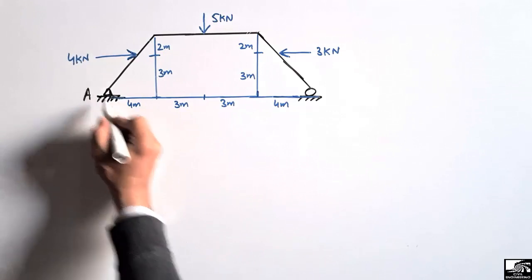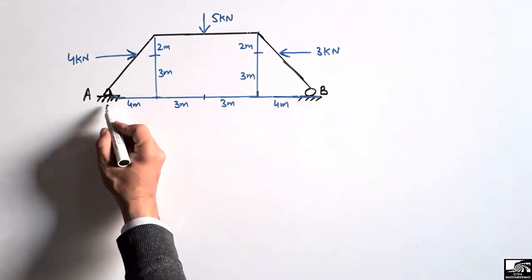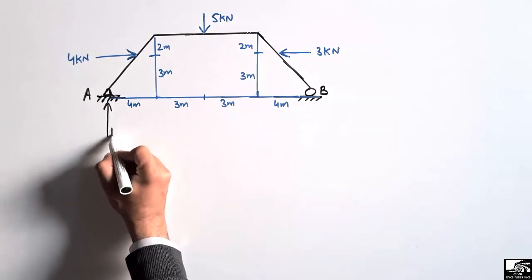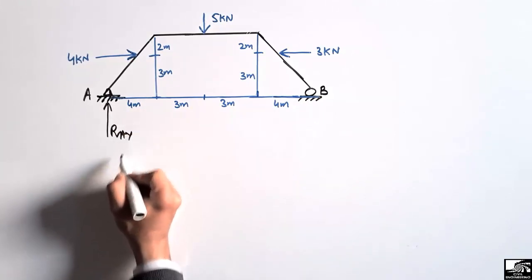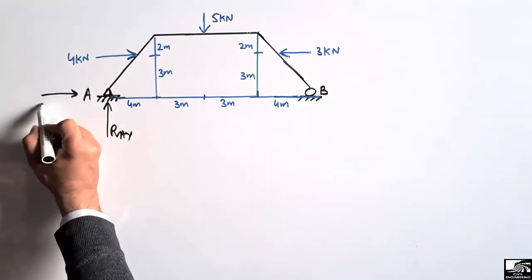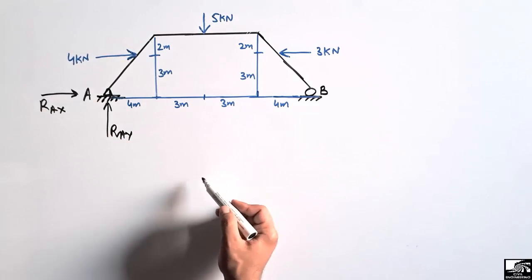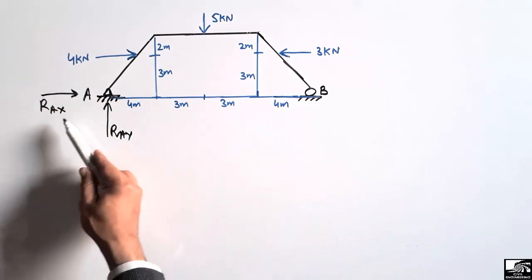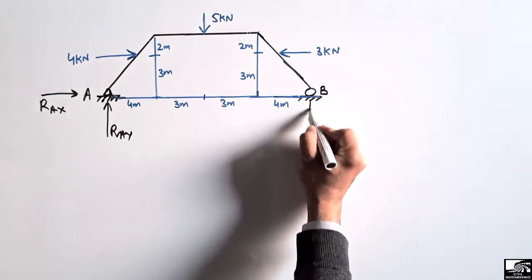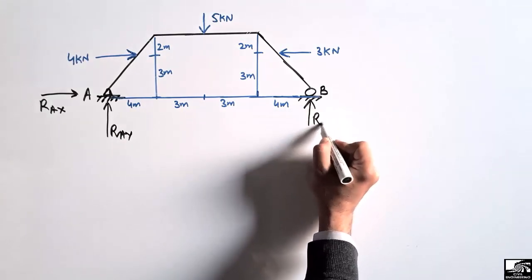Let's consider this is support A and this is support B. It is a hinge support, so we can say it can resist the vertical load R_AY and also the horizontal load R_AX, because a hinge support has the property to take both horizontal and vertical loads. This is a roller support, so it can only take the vertical load, which we call R_B.